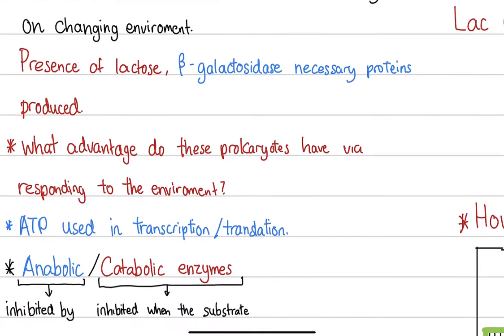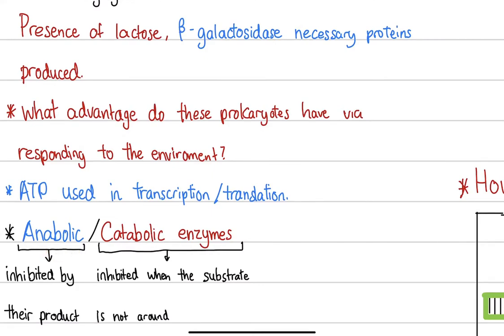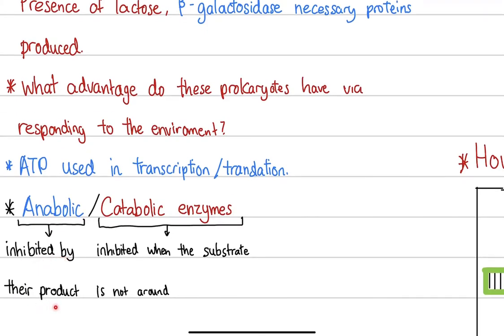There are two kinds of metabolism: anabolic and catabolic. Anabolic metabolism builds bigger molecules by combining smaller ones. Catabolism is when larger macromolecules are broken down. Metabolism is monitored and performed by enzymes — we have different enzymes for catabolic and anabolic reactions. Catabolic enzymes will be inhibited by their product.